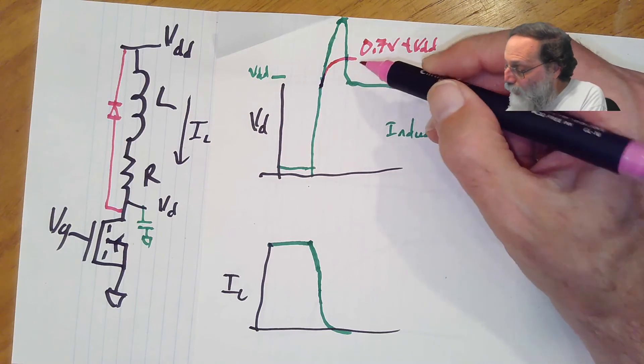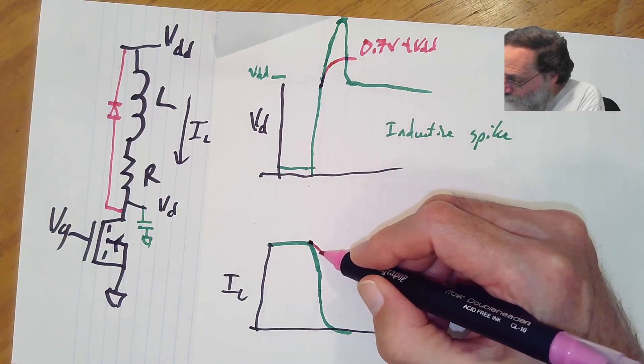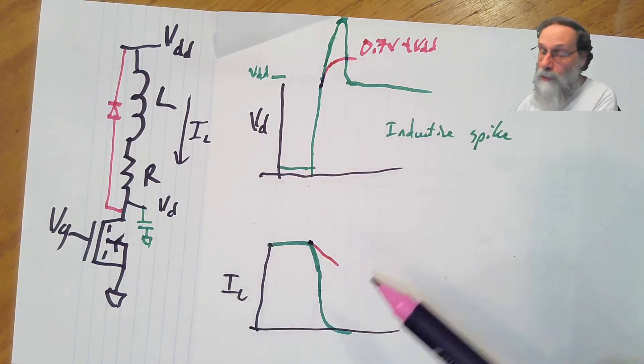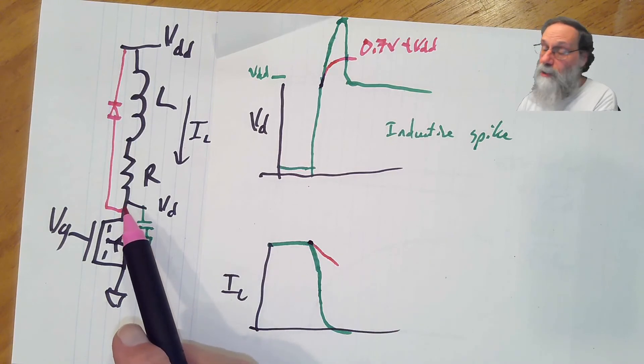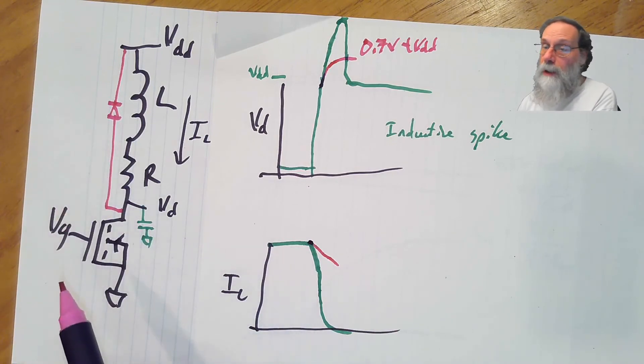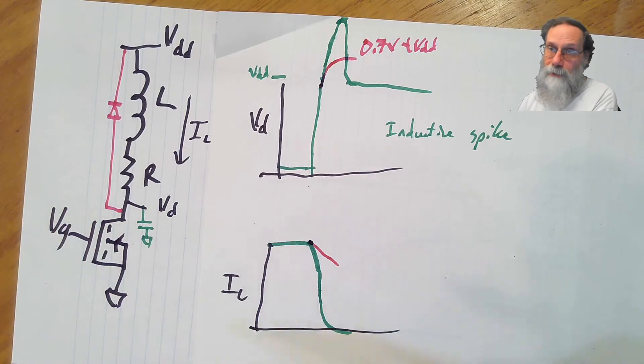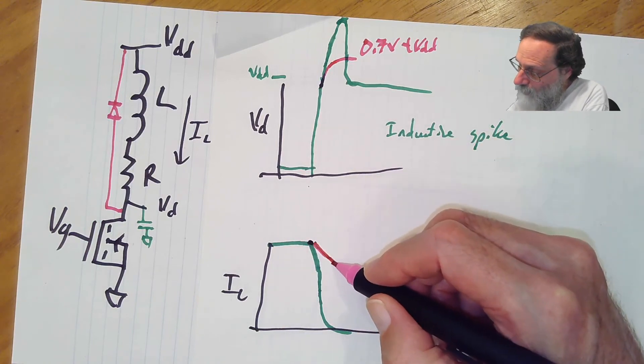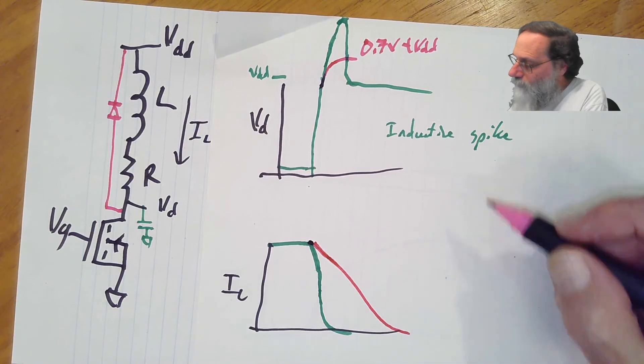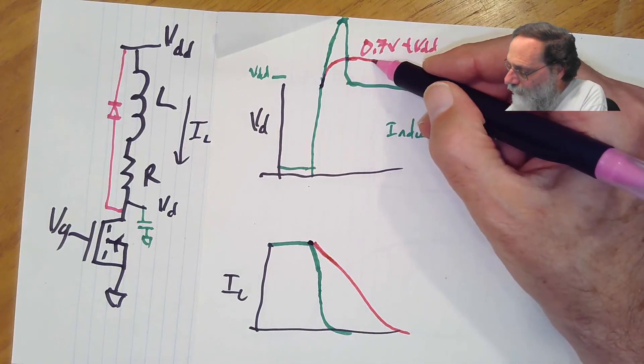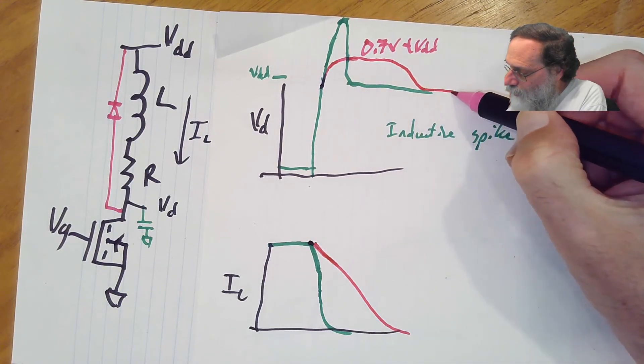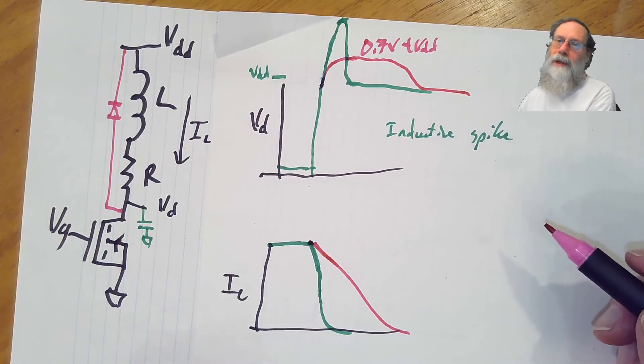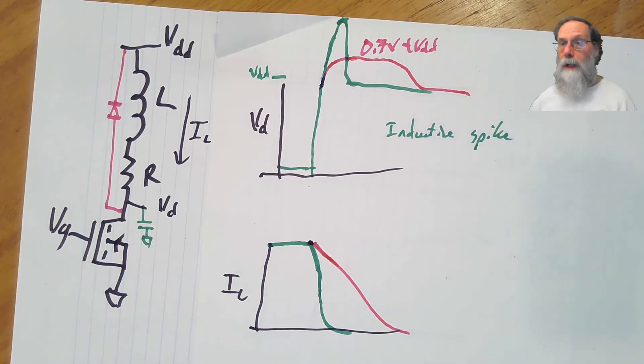And what's going to happen is the current will drop, and how fast it drops depends mainly on what's the resistance of this resistor, what's the resistance of the diode. The smaller the resistance, the faster it'll drop. But if it's a large resistor, it'll drop slowly, because it takes a while for things to dissipate. And so this will drop down, and we will get a longer but lower spike.